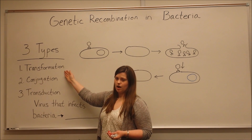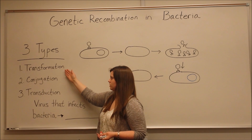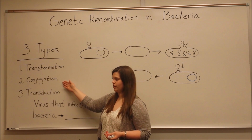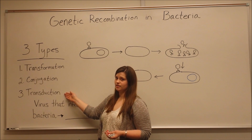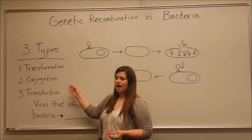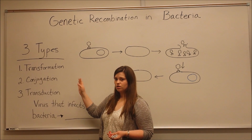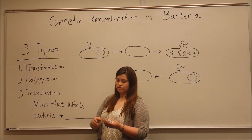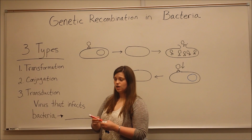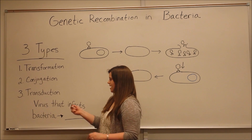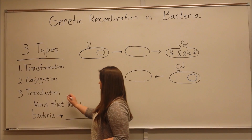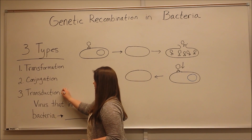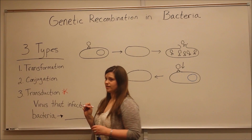There are three types of genetic recombination in bacteria cells: transformation, conjugation, and transduction. I have videos on all three of these mechanisms, so I encourage you to take a look at those. But today, in this video, we're actually talking about the process of transduction.